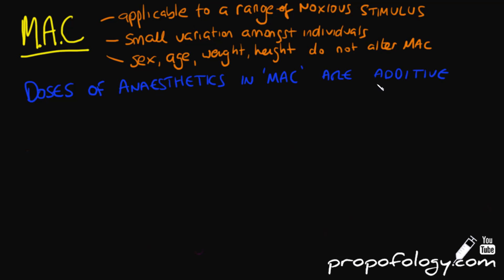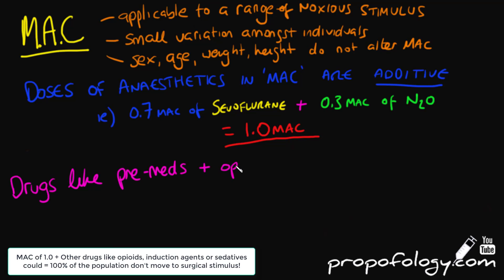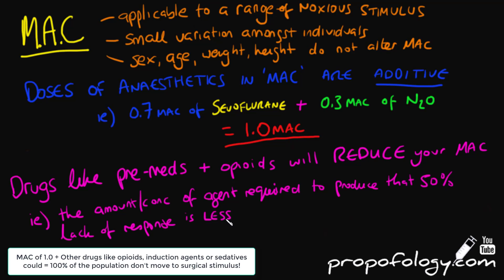As an example, if you were to add 0.7 MAC of sevoflurane and 0.3 MAC of nitrous oxide, you would get 1 MAC. It's very important to remember that drugs like premedications with midazolam or opioids will reduce your MAC — the concentration required to produce 50% lack of response to surgical stimulus is less if you give, for example, morphine. However, your machine doesn't know that and will still calculate your MAC as 1 for any given agent.